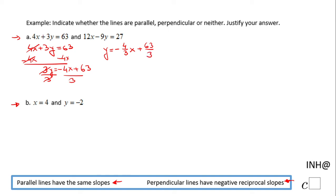If you want to simplify the last part, 63 over 3, that's great. However, the only thing we need is this number, this coefficient of x, which is negative 4 thirds, and which is the slope of the line given by the equation 4x plus 3y equals 63.